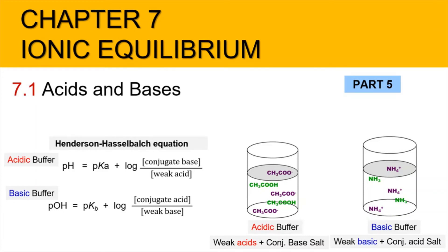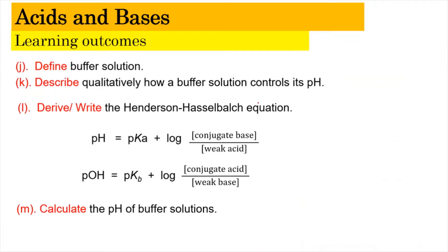Hi, Assalamualaikum and a very good morning. Today we are in Chapter 7, Ionic Equilibrium, looking into subtopic 7.1 Acid and Bases, Part 5. In this video, we're going to learn about the definition of buffer solution, describe qualitatively how a buffer solution controls its pH, and derive the Henderson-Hasselbalch equation: pH = pKa + log(conjugate base / weak acid).